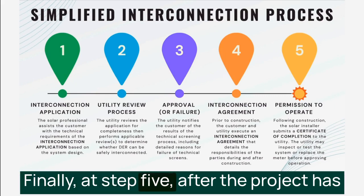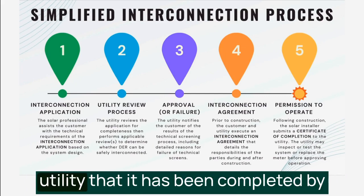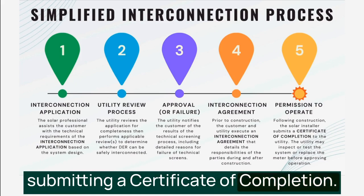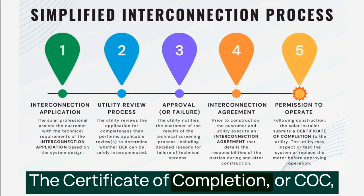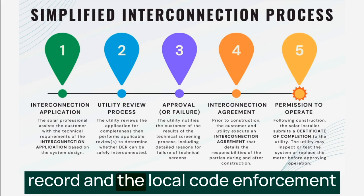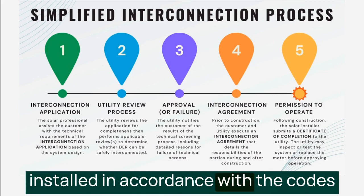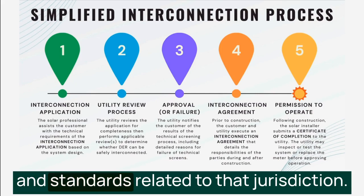Finally, at step five, after the project has been built, the contractor notifies the utility that it has been completed by submitting a certificate of completion. The certificate of completion, or COC, is typically attested by the electrician of record and the local code enforcement official to verify that the system has been installed in accordance with the codes and standards related to that jurisdiction.